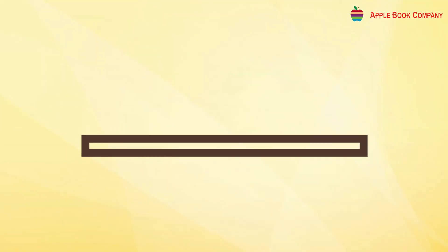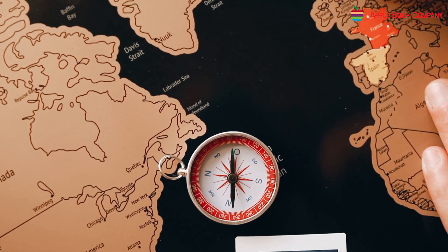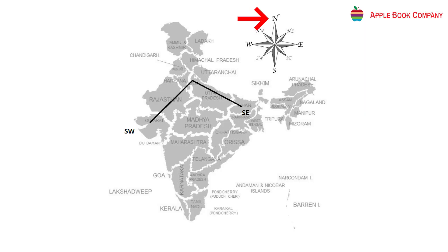Directions on a map are important. An arrow marked with N in the upper right corner shows north.